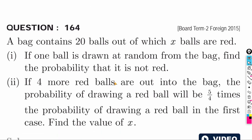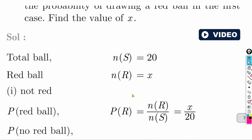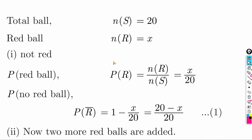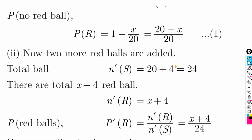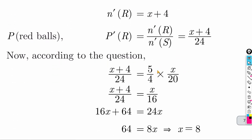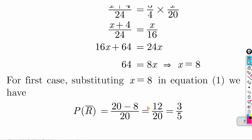A bag contains 20 bowls, of which x are red. Probability of not drawing a red bowl = (20 - x) by 20. If 4 more red bowls are added, total = 24, red bowls = x + 4. New probability = (x + 4) by 24. According to the condition, this equals 5/4 of the original probability. Solving gives x = 8.